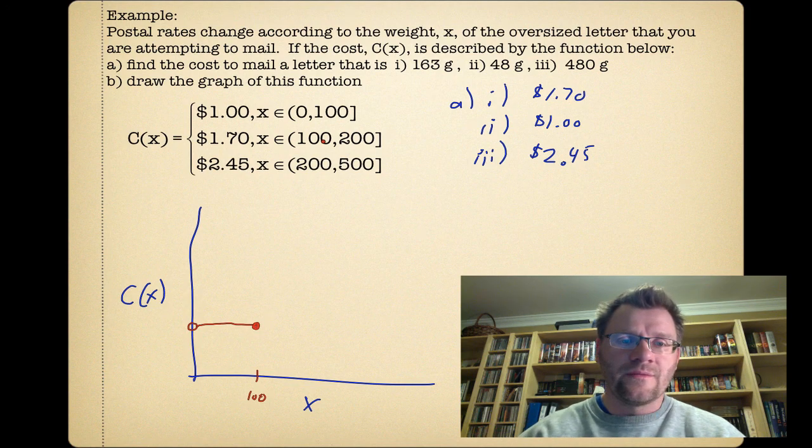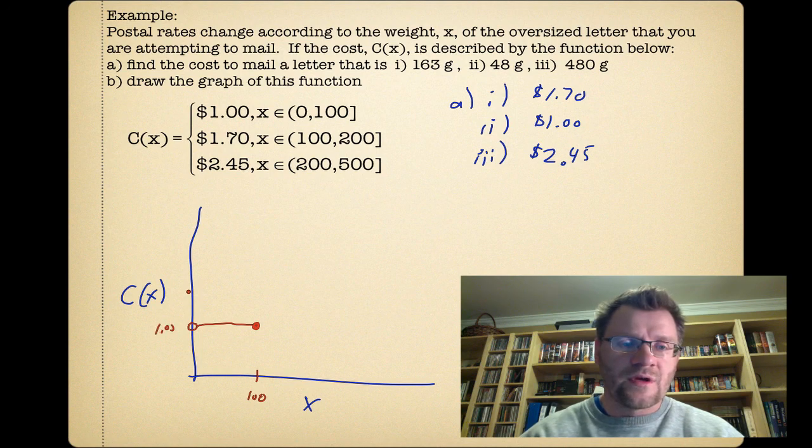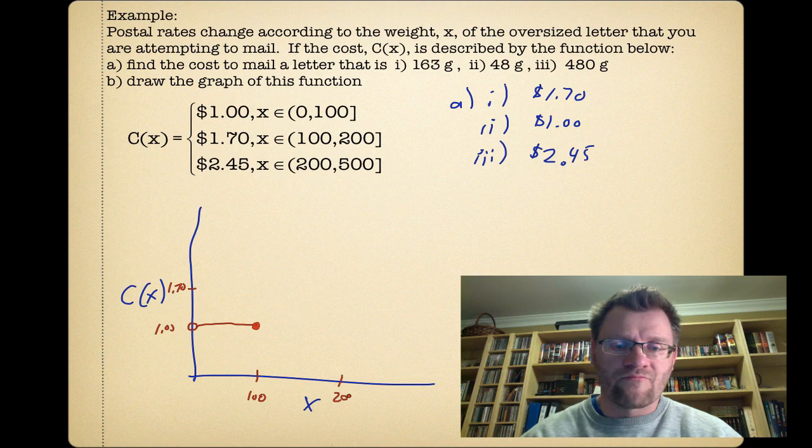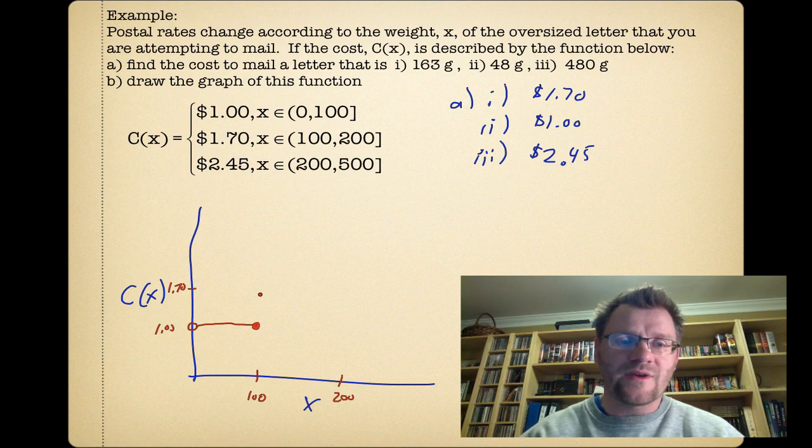Now from 100 to 200, it's going to cost $1.70. So that might be somewhere up here. Now notice that the 100 is included in the first part, so it can't be included in the second part. So it'll look something like this.